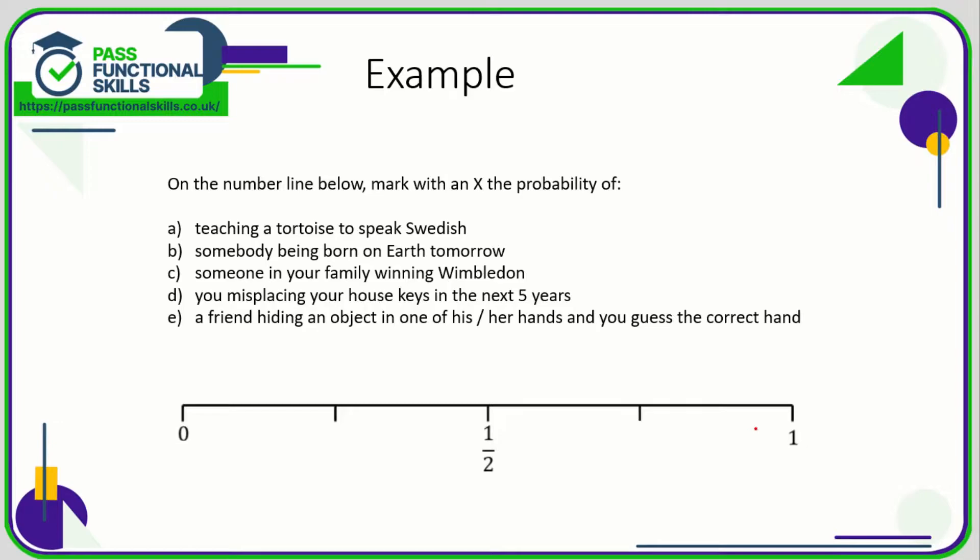Let's take a look at some examples of probability. So here we need to put a mark on the scale. Remember, zero is impossible, one is dead certain. What's the probability of teaching a tortoise to speak Swedish? Well, that is 100% impossible, so therefore that would have to go here on zero.